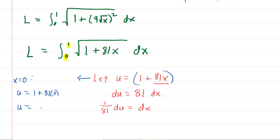This shows us that u equals one. That's your lower bound in terms of u. Then for your upper bound, plug in one for x. We'll have u equals one plus 81 times one, which works out to 82.